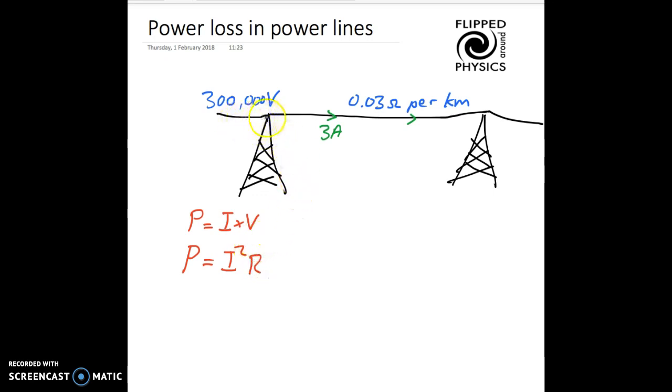Now, in overhead power lines in the national grid, we may have very, very high voltages. For example, I put here 300,000 volts, and from this value of voltage and this value of current, we can use this equation P equals I times V to actually define the power transmitted. So that's the amount of energy per second transmitted over the power lines.